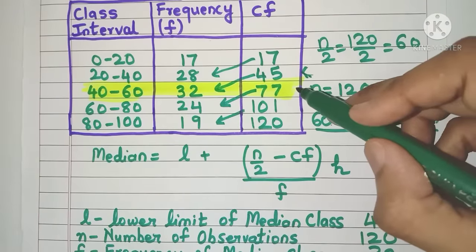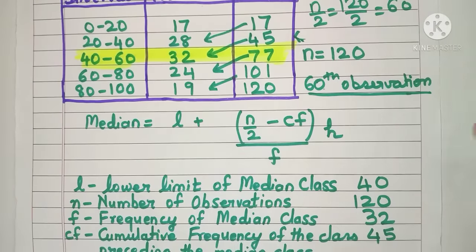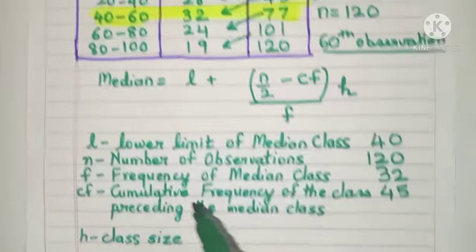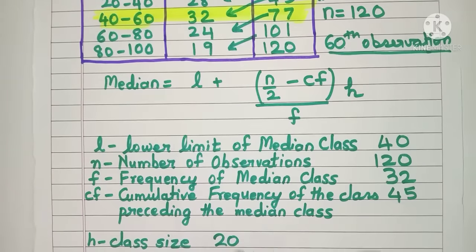Don't make the mistake of writing 77. 77 is the CF of the median class. We have to take CF of the class preceding the median class. Now the next thing is class size H which is very easy. 100 minus 80, you take any class interval, you will get it as 20.